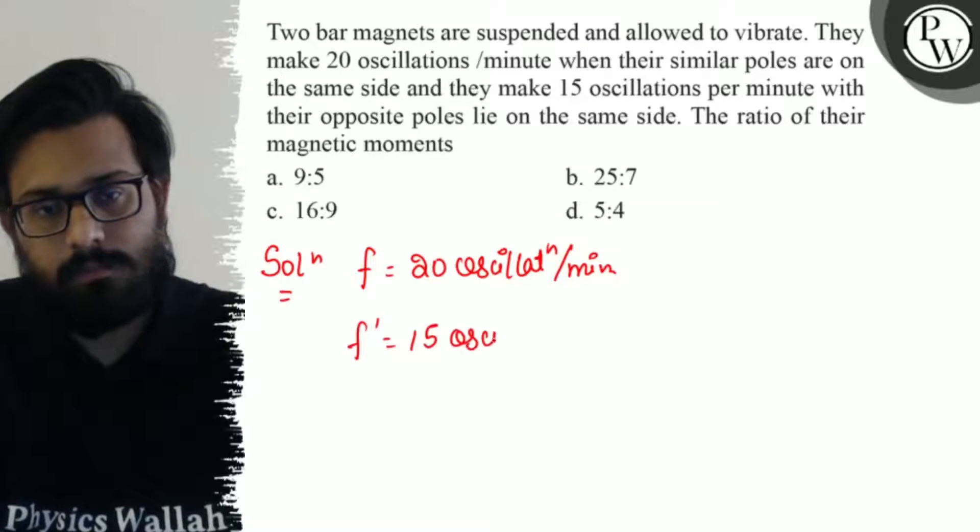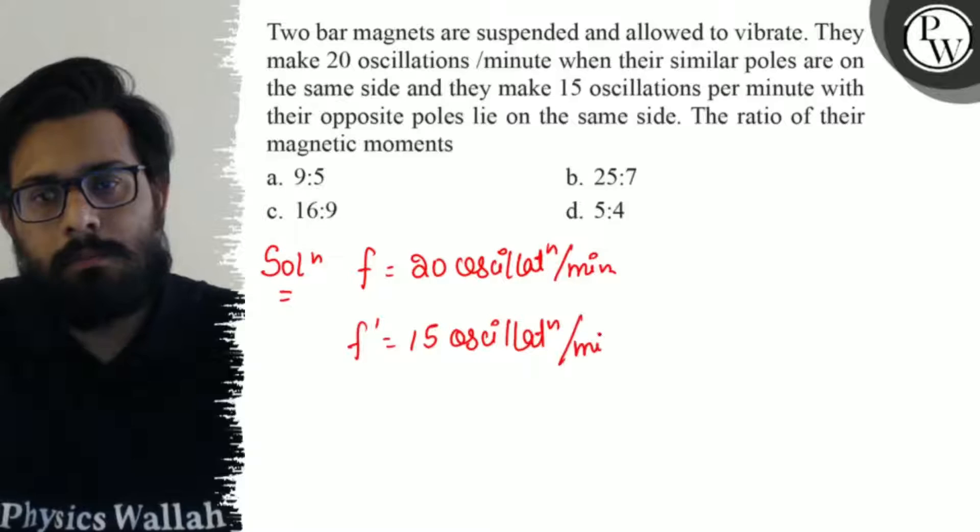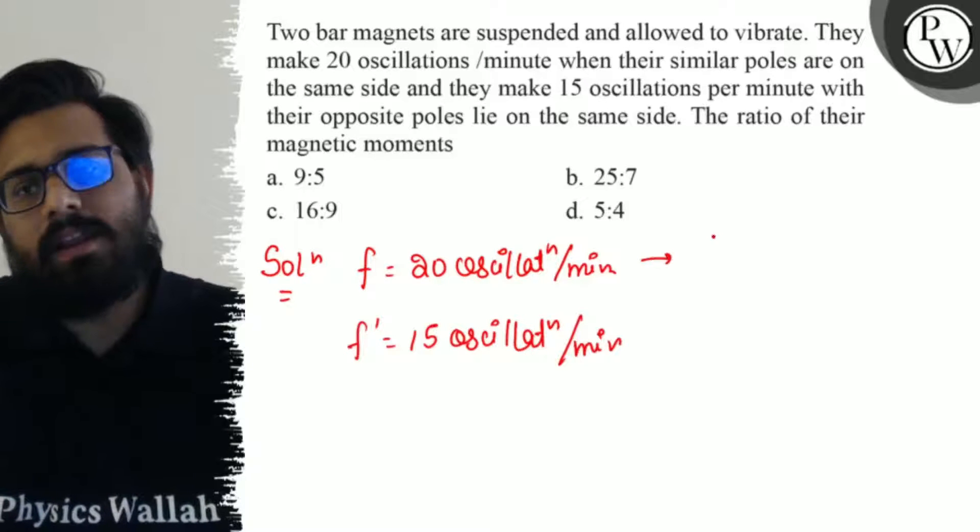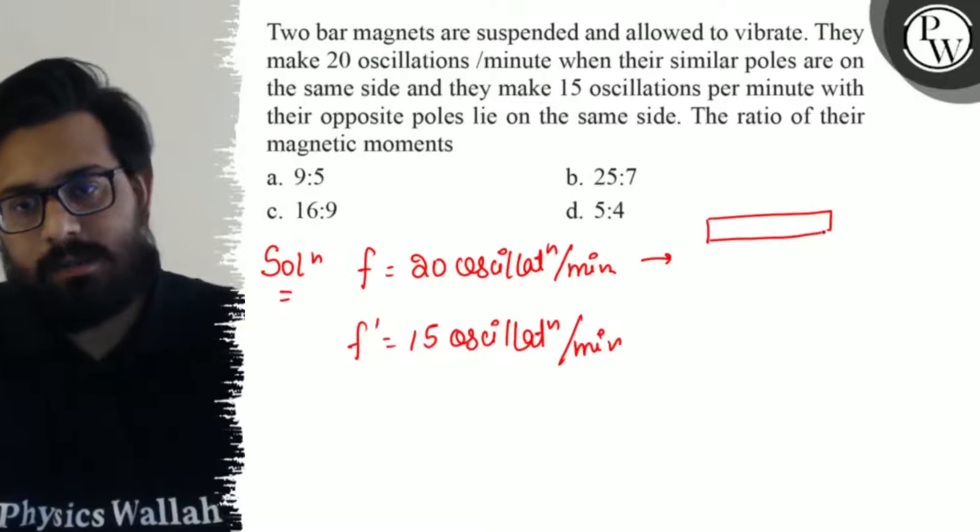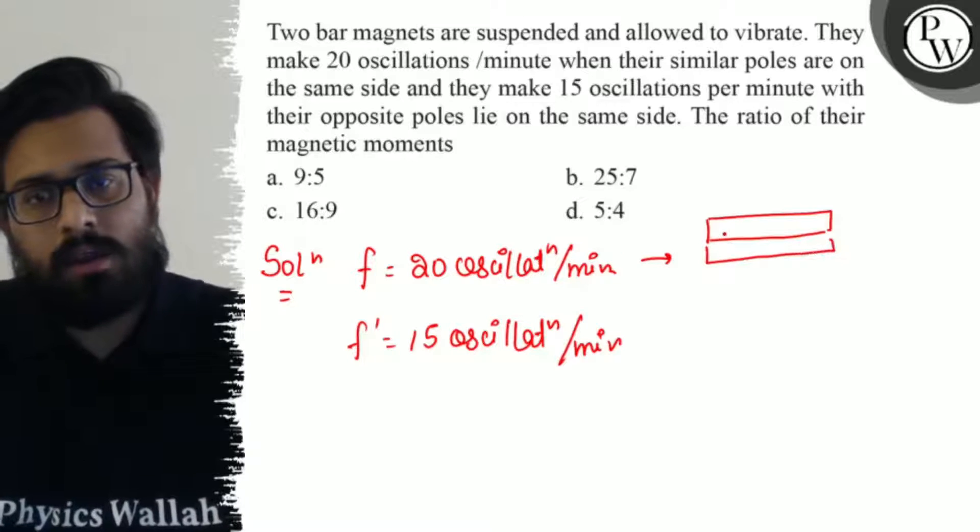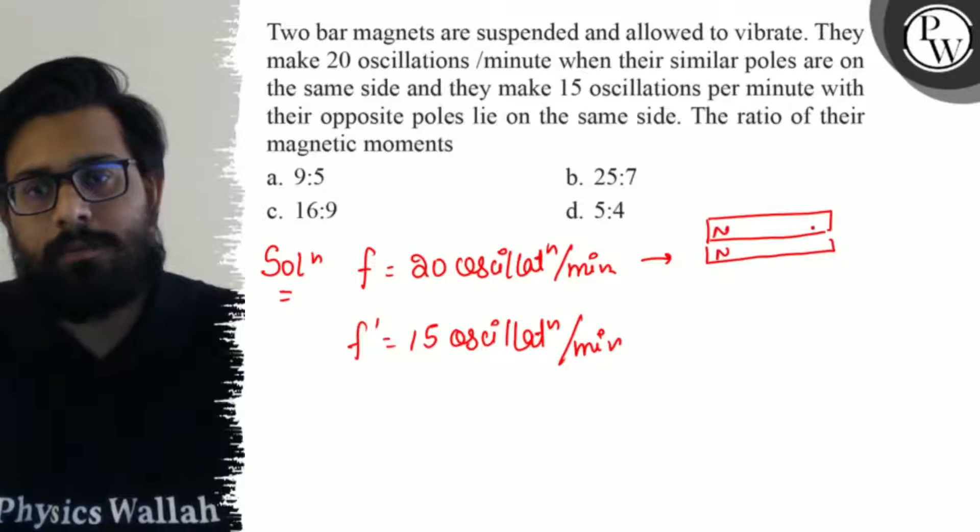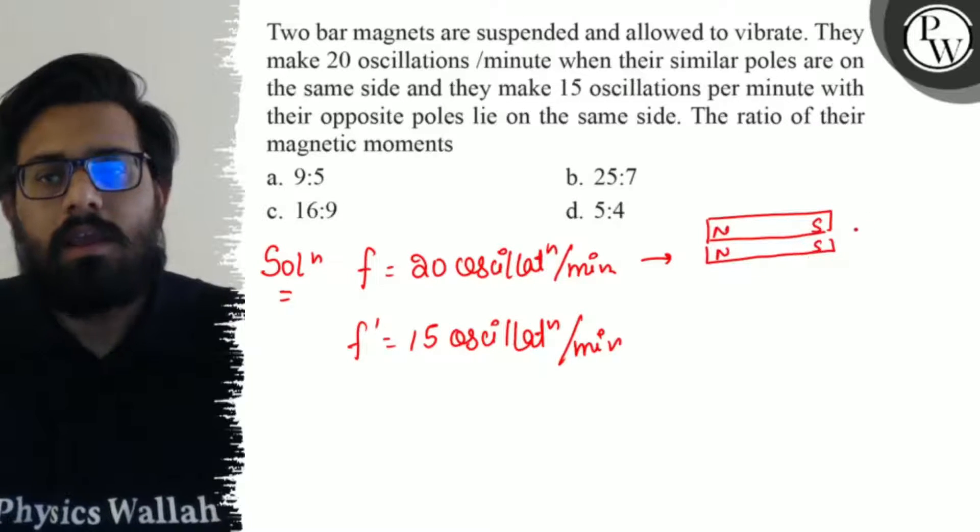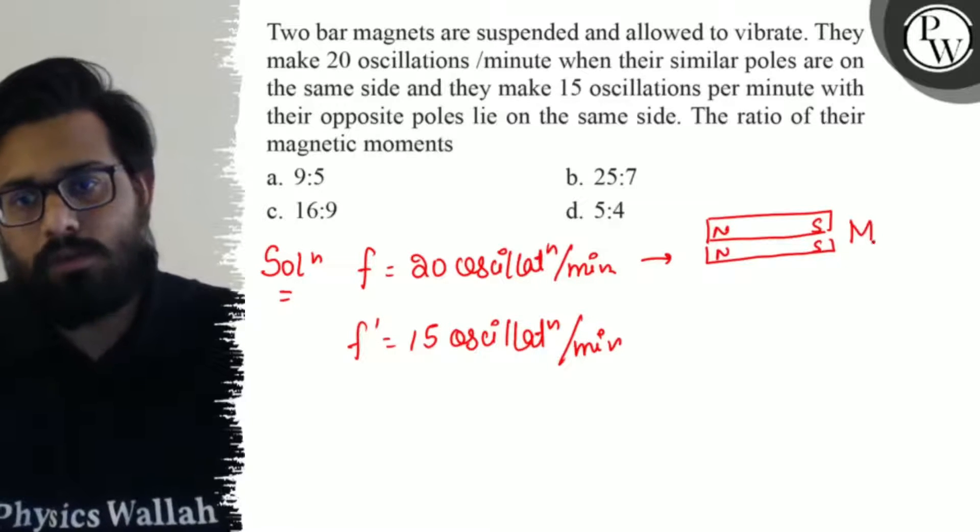In the first case when both bar magnets are in the same direction, for example north pole here, north pole here, south pole, south pole. In this case the net magnetic moment is about M1 plus M2.